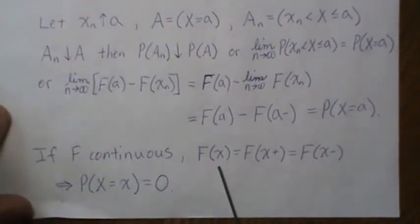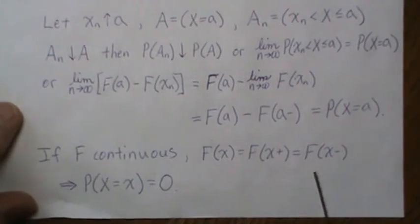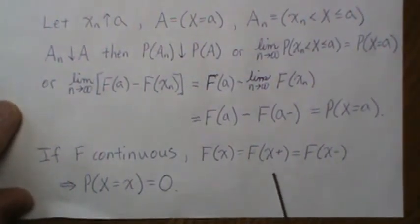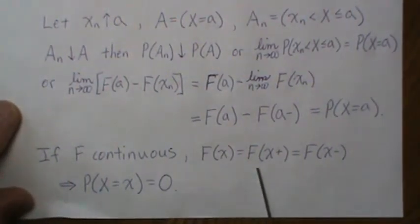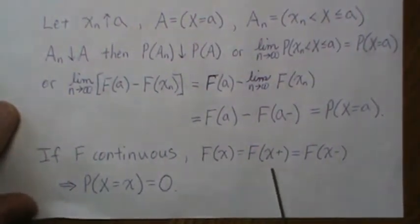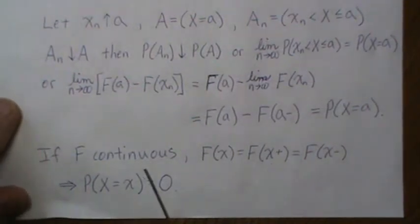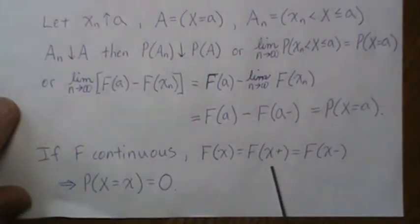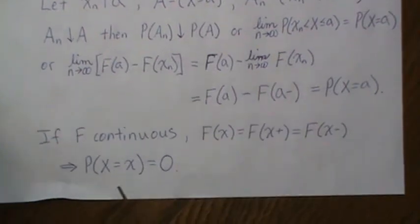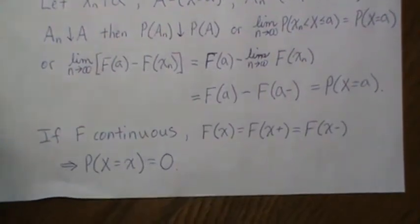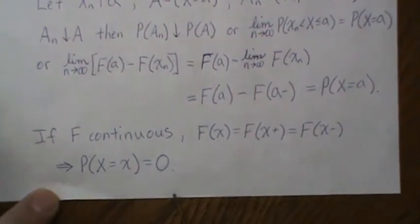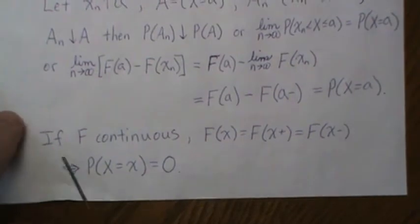F is continuous when F of x equals both the left and right limits. When it's continuous, the left limit also equals the right limit, which implies that the probability of any single point is zero when X is continuous.